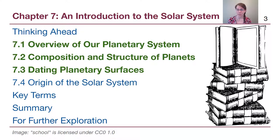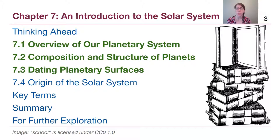Welcome to the last of our modules, Module 7, where we will talk about the last chapter of OpenStax's Astronomy, Chapter 30. But before we do that, we need to talk about the solar system. This is when we cover Chapters 7 through 14 of OpenStax's Astronomy — just the very brief highlights of objects in our solar system.